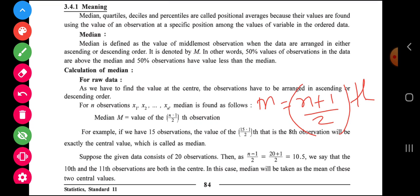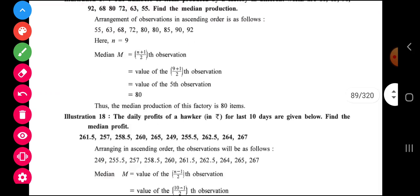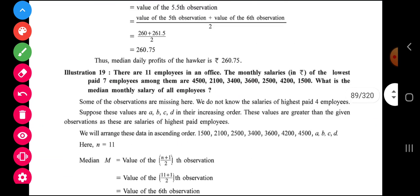So first you have to arrange the data and you have to count. Say if there are 7 observations, so 7 plus 1 that is 8 divided by 2, 4th observation. So 4th observation is observed and you have to write your answer. So this is how median is calculated for ungrouped data. We will practice 2-3 examples to get a better idea.